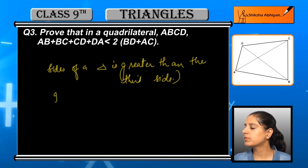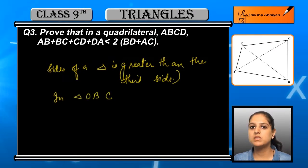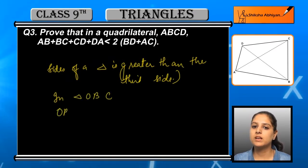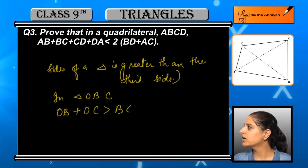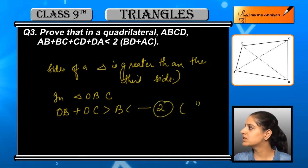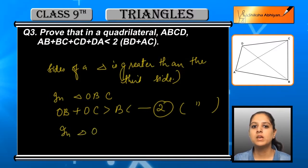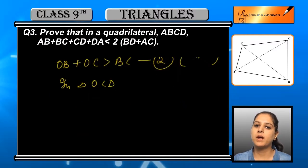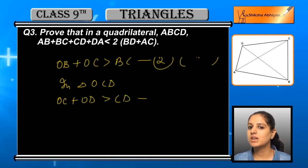Now in triangle OBC, we have OB plus OC is greater than BC. This is equation number 2. The reason is the same — if we add two sides of a triangle it is always greater than the third side. Moving to the third triangle OCD: OC plus OD is greater than CD. This is equation number 3, for the same reason.